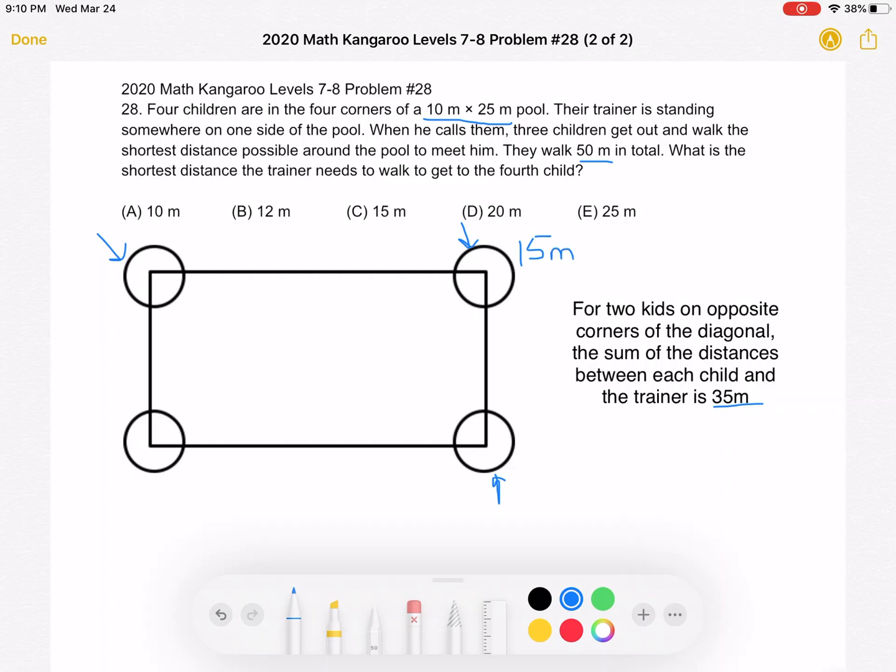So what do we need to find? We need to find the distance between the trainer and the fourth child. So again, this continues to be true. We're trying to find the distance between this fourth child and the trainer.